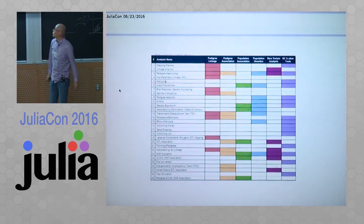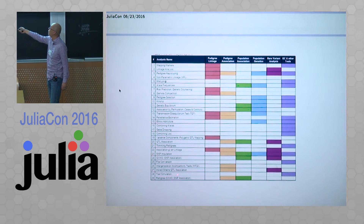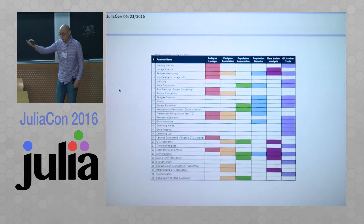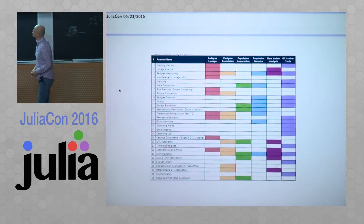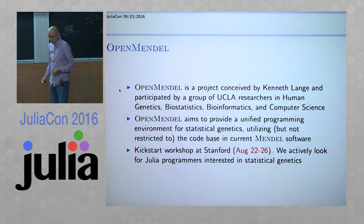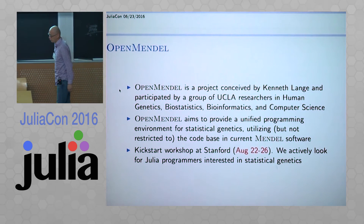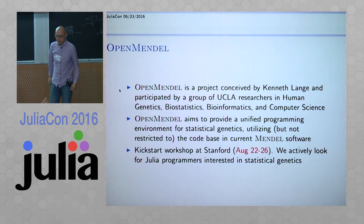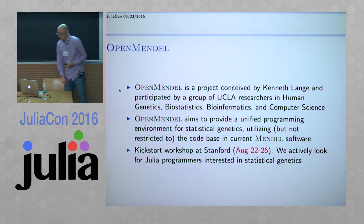This is what the current Mendel can do - it's not meant for you to read, but it just shows it can do a lot of things - like 29 options. They span different areas of genetics: population analysis, pedigree analysis, GWAS that Kevin was talking about - that's one thing it can do, but it can do a lot more than that. So basically the idea of Open Mendel is that we have a huge code base in Mendel, and that's a good starting point to form this community - redesign the interface of all those analysis options and put that totally open source on GitHub. That's the main idea of the Open Mendel project.